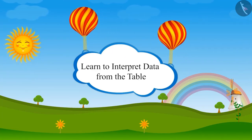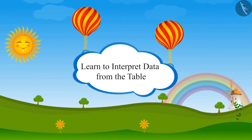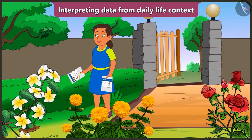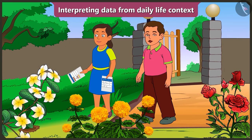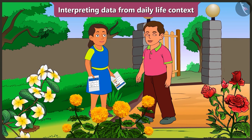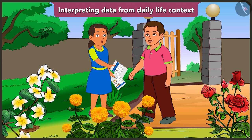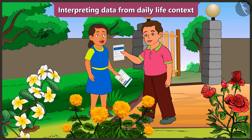Interpreting Data from Daily Life Context. Hey Bubbly, what are you doing in the garden? Bunty, Mummy has prepared this table and given it to me. There are different flowers in the garden. I am counting the blossomed flowers to find out how many flowers have blossomed.